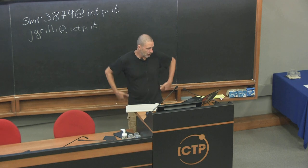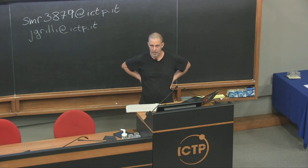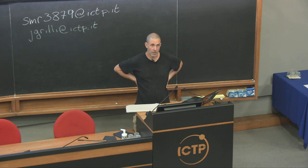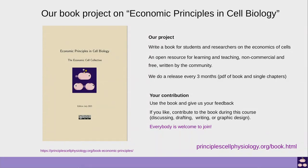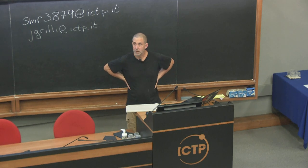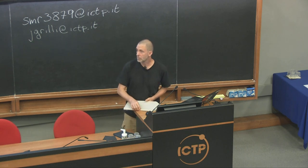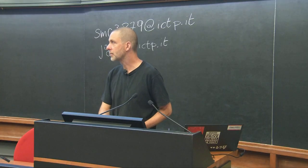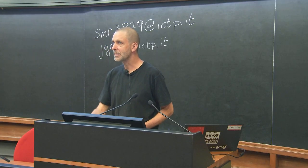Some general words about the book. The idea is to write an open textbook for students and researchers on what we call economic principles — basically things like resource allocation and scattering problems in cells, but it can also go beyond that to the organ level. We want to write this in a self-organized way without any commercial interests, without publishers. The book will be available as a PDF for everyone, and we also want to make it possible to have copies at a very minimal price as print-on-demand.